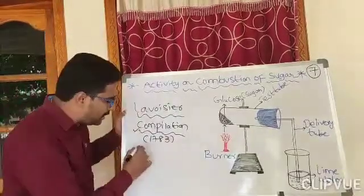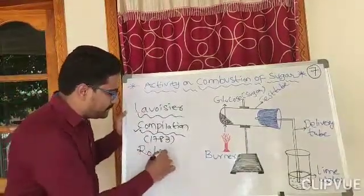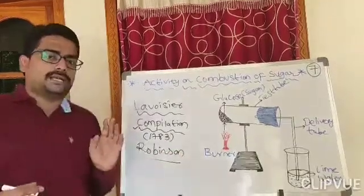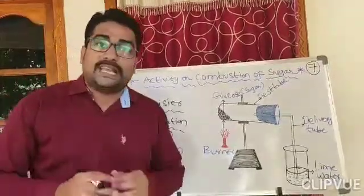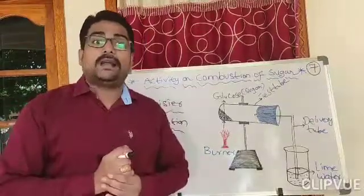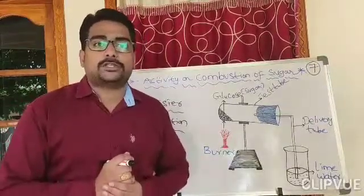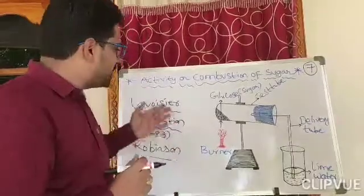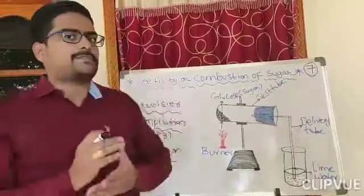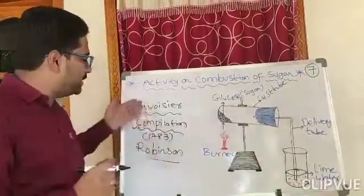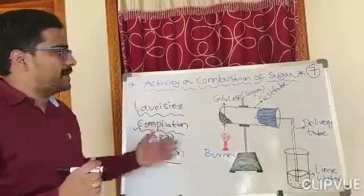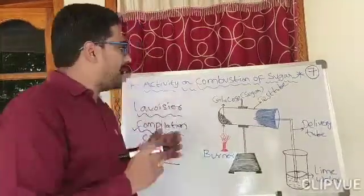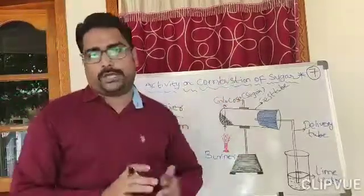After Lavoisier, a famous scientist called Robinson also stated that respiration is a type of combustion, and combustion is the source of heat in animals. This is the introduction — the statements given by Lavoisier and Robinson regarding respiration and combustion. Now let us observe an activity on combustion of sugar.